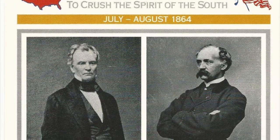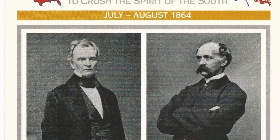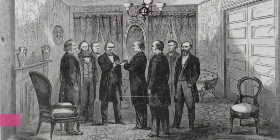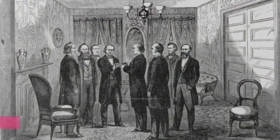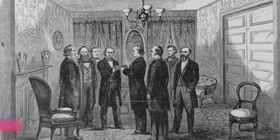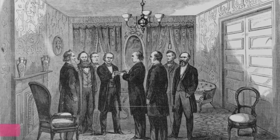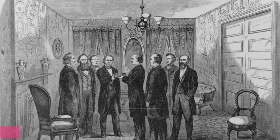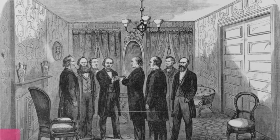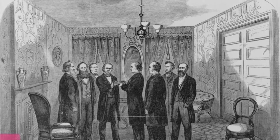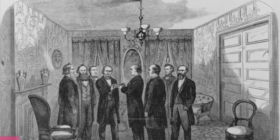This was proposed in July of 1864. The bill would also require that each state's constitution abolish slavery, not accept secession, and disqualify Confederate officials from voting or holding office in government.